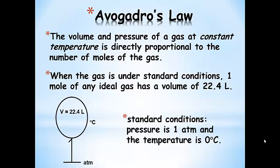Finally, Avogadro's Law: the volume of a gas at constant temperature and pressure is directly proportional to the number of moles of gas. When the gas is under standard conditions, one mole of any ideal gas has a volume of 22.4 liters. At standard pressure (one atmosphere) and standard temperature (zero degrees C), one mole of gas occupies 22.4 liters.